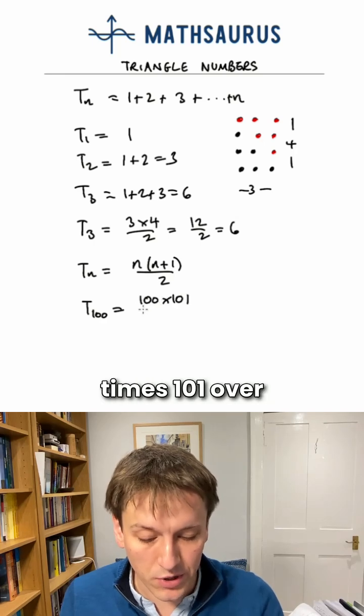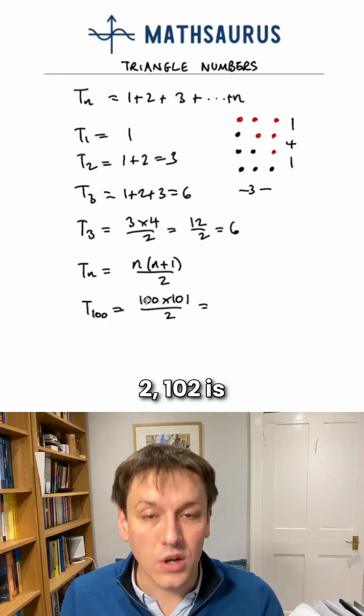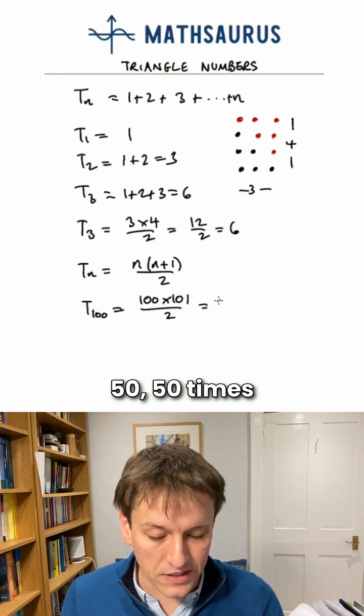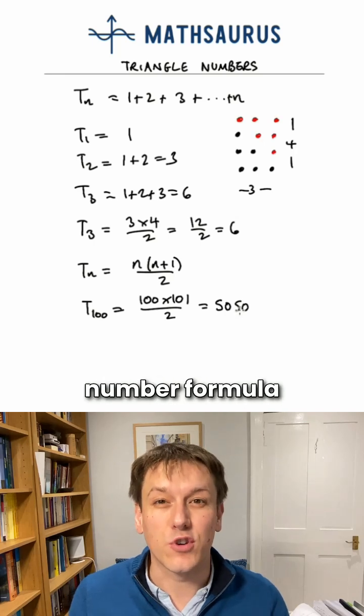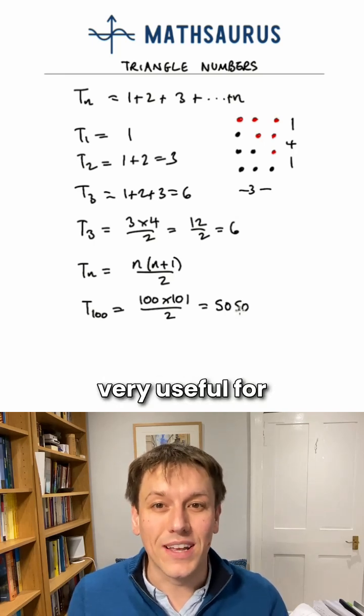As 100 times 101 over 2. 100 over 2 is 50. 50 times 101 is 5,050. So the triangle number formula is very useful for larger values.